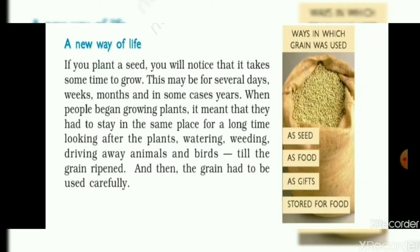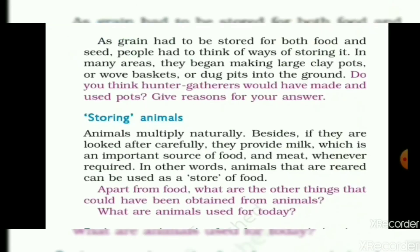They had to look after the plants — watering, weeding, driving away animals and birds until the grain ripened. After ripening, they would use the grain as food. As grain had to be stored for both food and for seeds, people had to think of ways to store it.